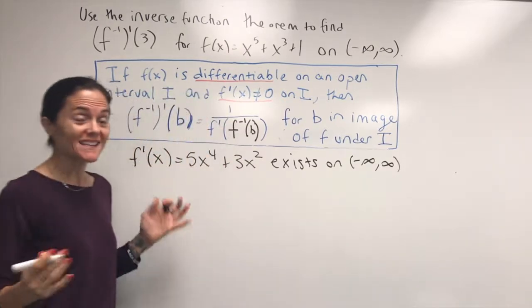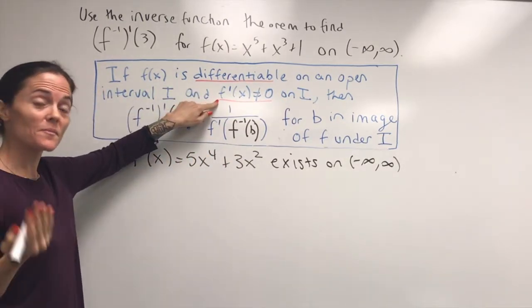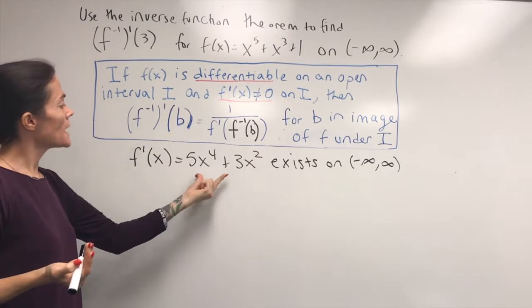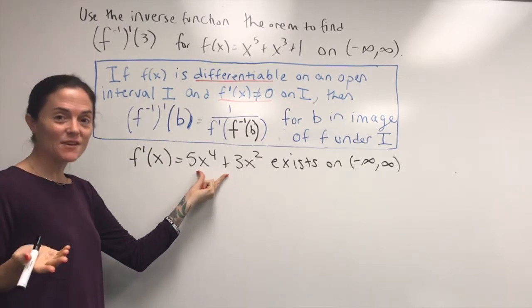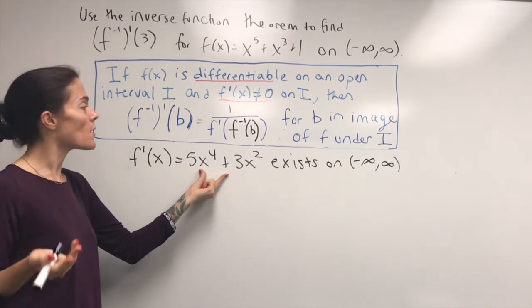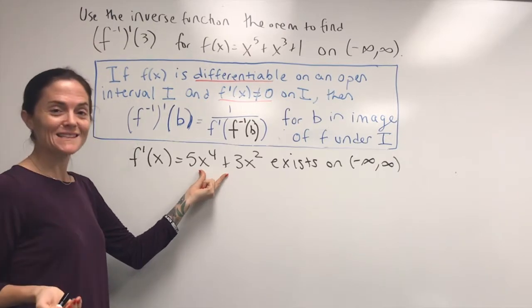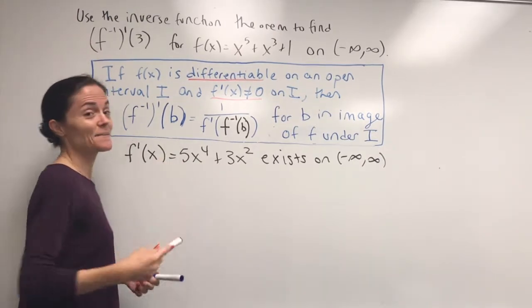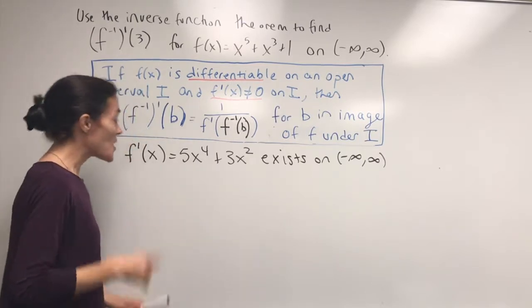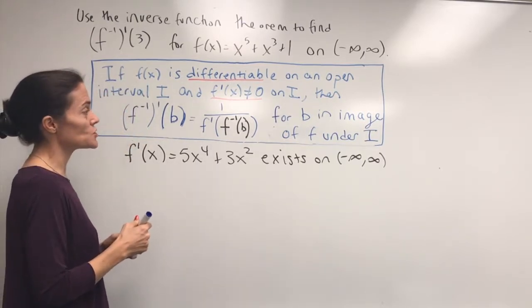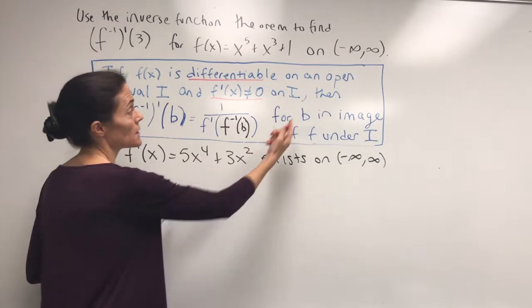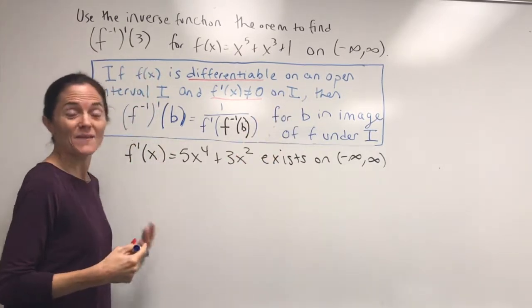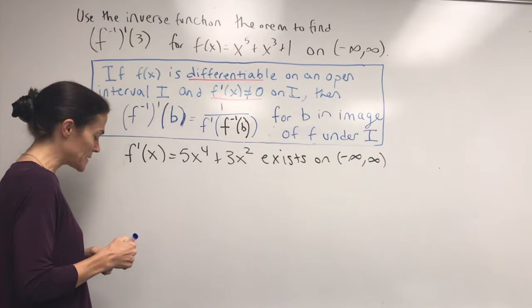Now you might be concerned that the derivative must not equal 0, and if we evaluate this at 0, we get 0. You might think this is problematic, but if we want to apply this theorem exactly, what we can do is just restrict to a smaller open interval so that we still have 3 in the image.